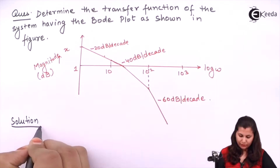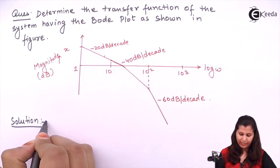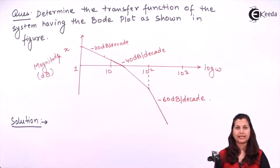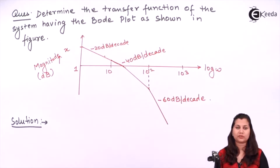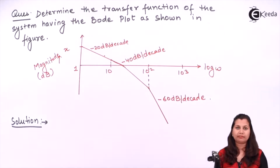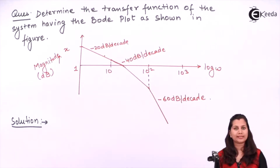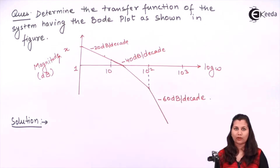Now in the transfer function we have various types of factors. We can have a constant term, we can have an integral factor, first order factors, or second order factors. So we will start from the constant term k.